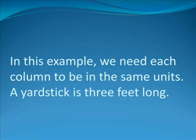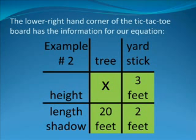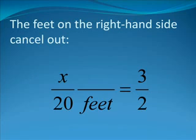In this example, we need each column to be in the same units. A yardstick is 3 feet long, by definition. Now we can fill in the blanks. The lower right-hand corner of the tic-tac-toe board has the information for our equation.